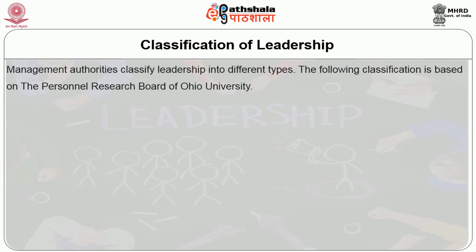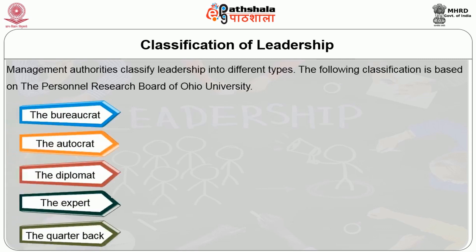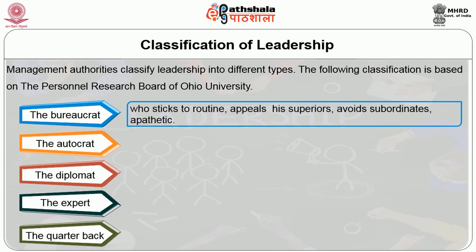Management authorities classify leadership into different categories. The following classification is based on the personal research board of Ohio University. The first classification is bureaucrat. These leaders stick to routine, appeal to their superiors, award subordinates, and remain apathetic.